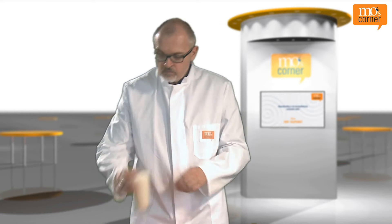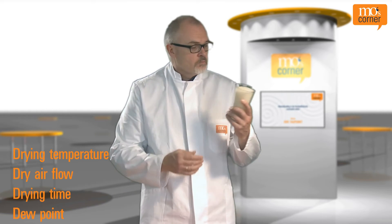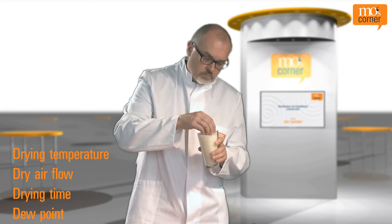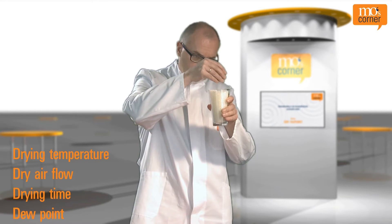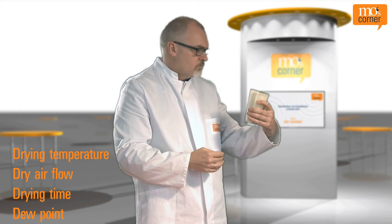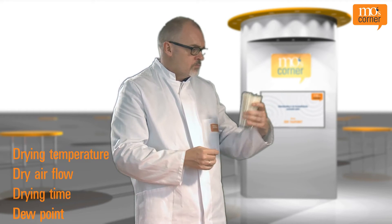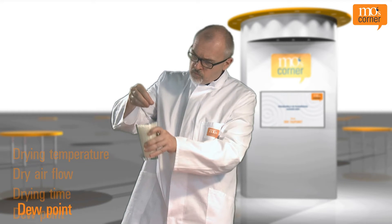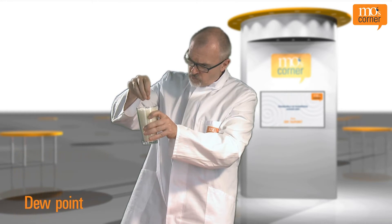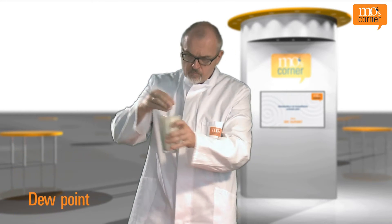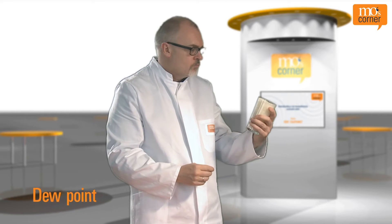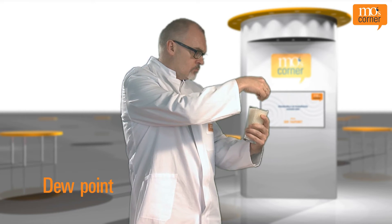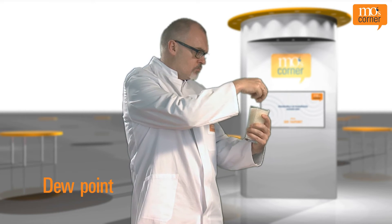When drying plastic granules there are four important factors: drying temperature, dry air flow, drying time, and dew point. We have dedicated an entire episode of Mohs Corner TV to these factors. Today we want to take a closer look at the most difficult and misunderstood of these factors — the dew point.